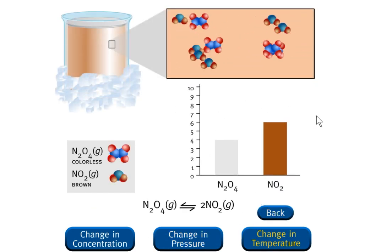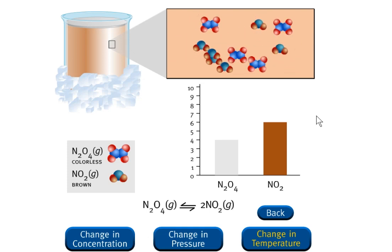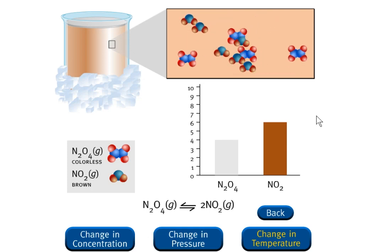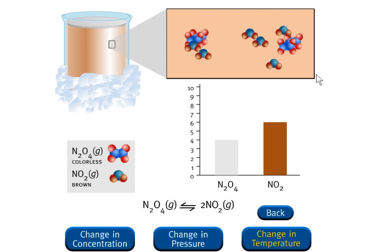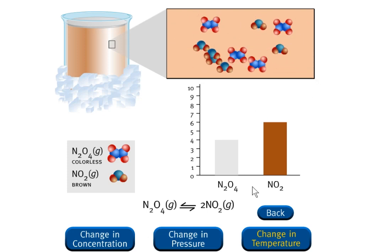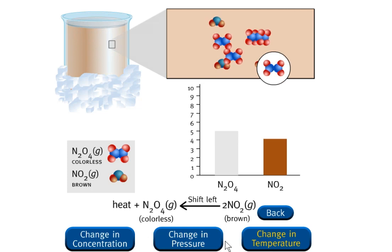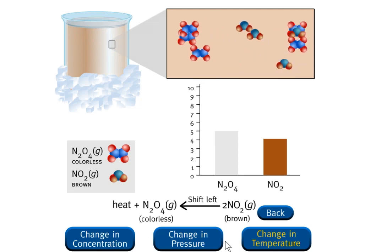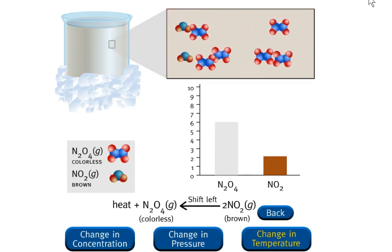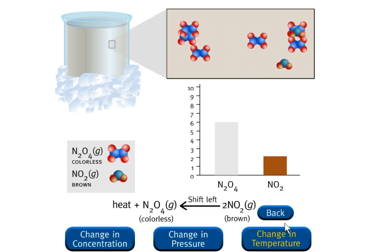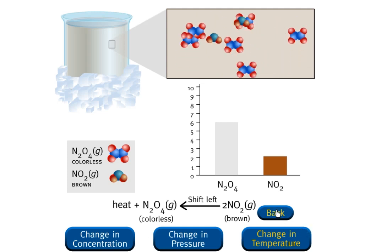You have decreased the temperature of the system by removing heat. This reaction is endothermic, so you can think of heat as a reactant. Heat must be supplied to the reacting mixture. The system can replace some of the heat that was removed by shifting to the left, producing more N2O4 and decreasing NO2, as you can see in the microwave.